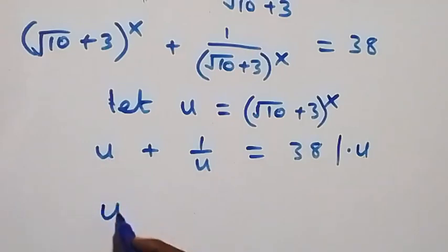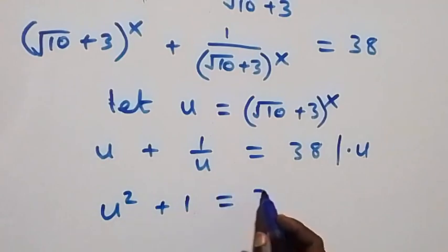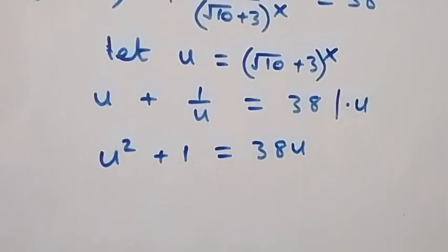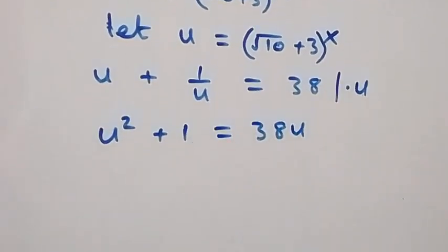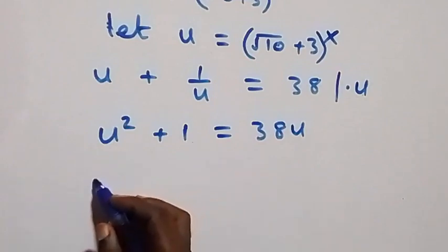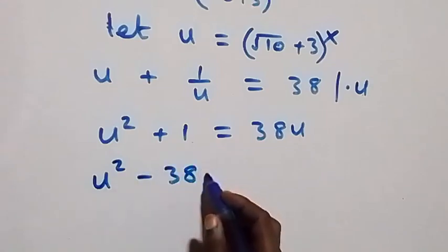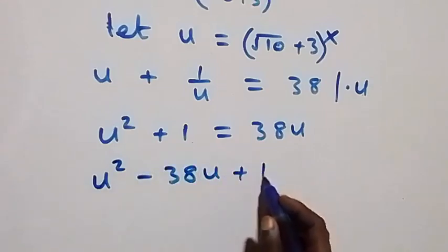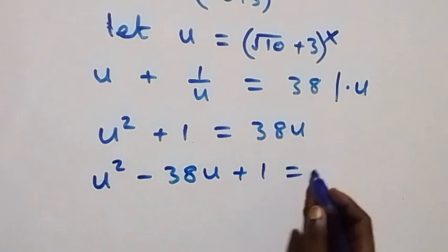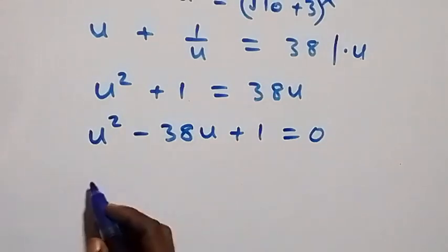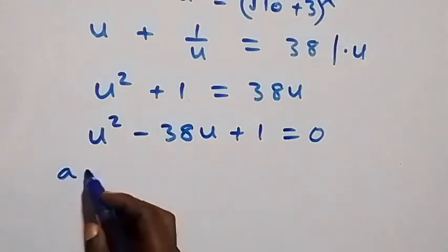We multiply the equation through by u, giving us u² plus 1 equals 38u. Taking 38u to the other side and rearranging, we get u² minus 38u plus 1 equals 0.